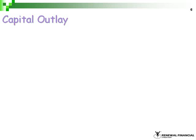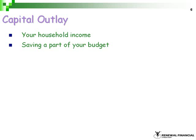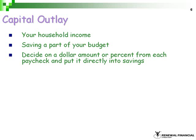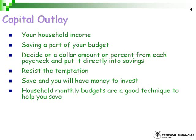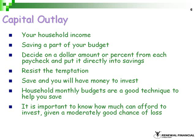Capital outlay is the main source for investing, which is your household income. You should make savings a part of your budget. Decide on a dollar amount or percent from each paycheck and put it directly into savings. Resist the temptation to dip into that money. Save and you will have the money to invest. Household monthly budgets are a good technique to help you save. It is important to know how much you can afford to invest given a moderately good chance of loss.